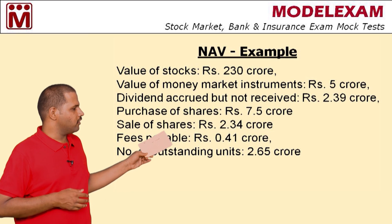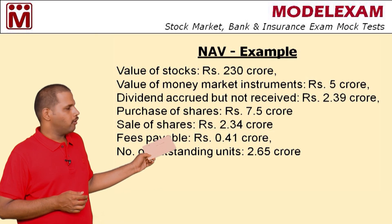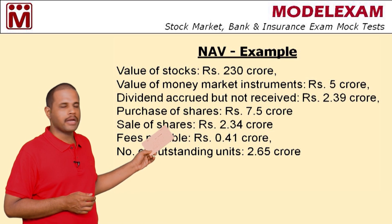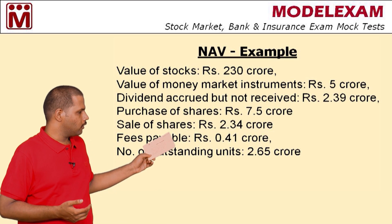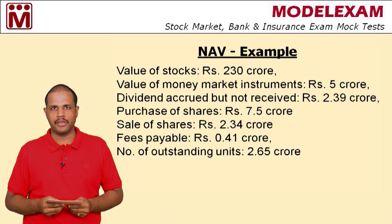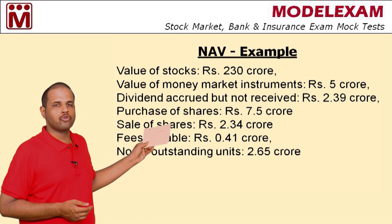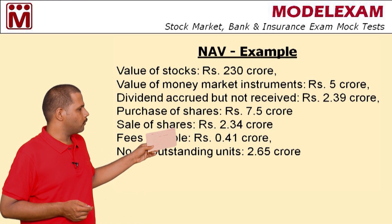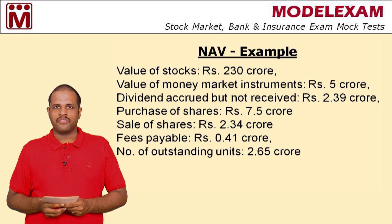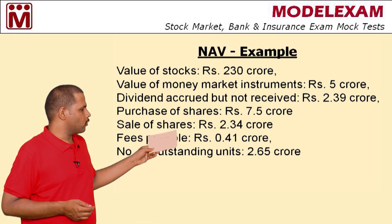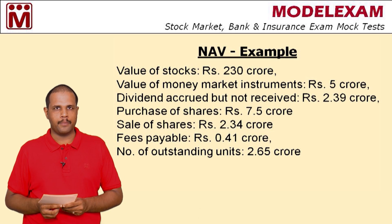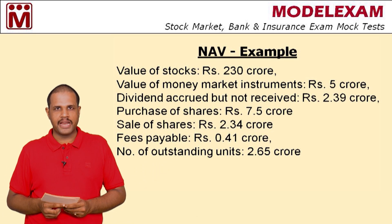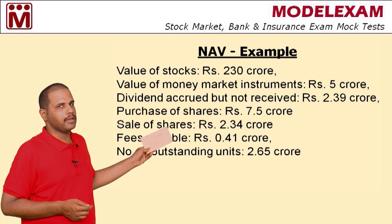Here is the case available to us. Value of stocks: Rs. 230 crore. Value of money market instruments: Rs. 5 crore. Dividend accrued but not received: Rs. 2.39 crore. Purchase of shares: Rs. 7.5 crore. Sale of shares: Rs. 2.34 crore. Fees payable: Rs. 0.41 crore. Number of outstanding units: 2.65 crore.